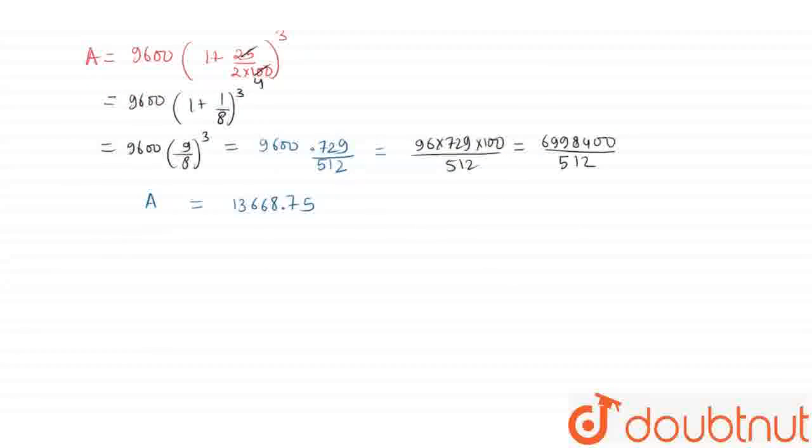Now we need to find the compound interest, which is amount minus principal. So that's 13668.75 - 9600.